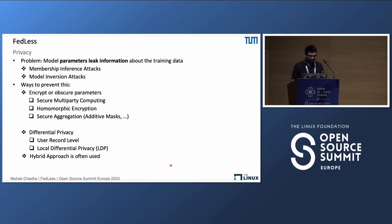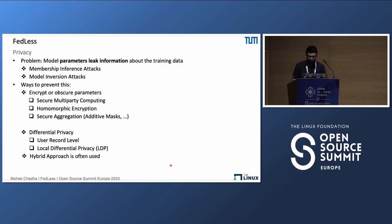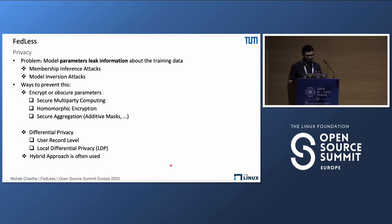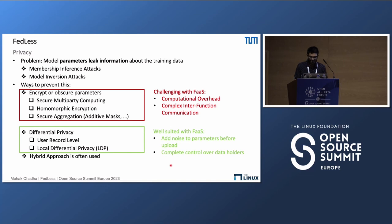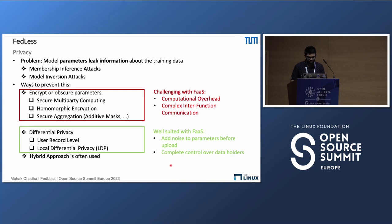A major problem in FL is privacy. The main idea is that model parameters can leak information about training data through membership inference attacks and model inversion attacks. There are different ways to prevent this, such as encrypting model parameters using secure multiparty computing or homomorphic encryption, or using differential privacy. Encryption is problematic for FaaS because of huge computational overhead and complex inter-function communication. DP, on the other hand, is well-suited, where clients simply add noise to parameters before uploading them to the parameter server. Fedless implements local differential privacy by default, where client functions add Gaussian noise to parameters before uploading.